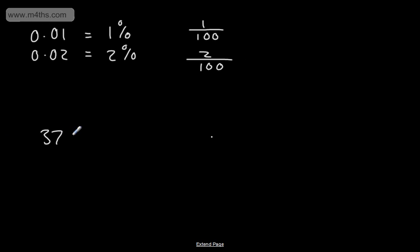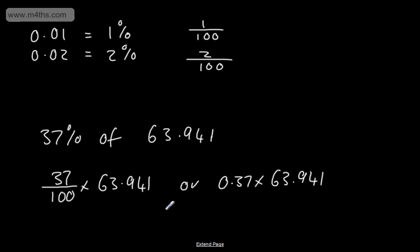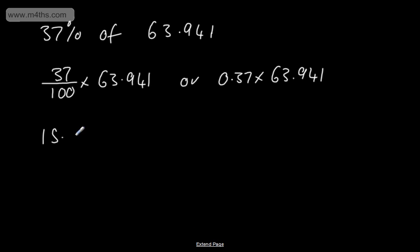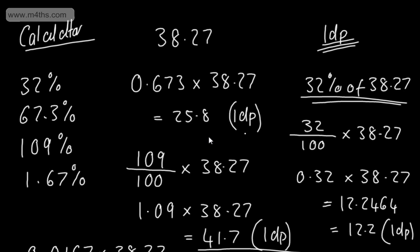Let's do a couple more. For 37% of 63.941: write 37/100 × 63.941, or use the multiplier 0.37. For 15.2% of 112.4: use 0.152 × 112.4. Remember, 'of' in maths means multiply. I prefer writing percentages as decimals rather than fractions like 152/1000 — it's much easier.